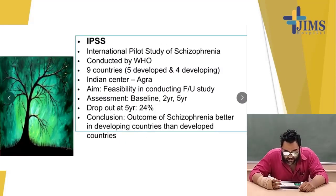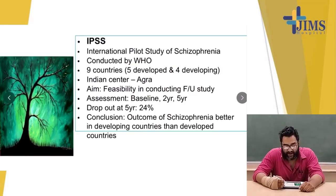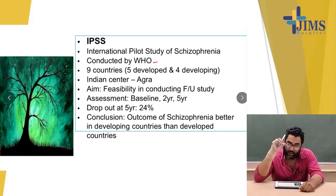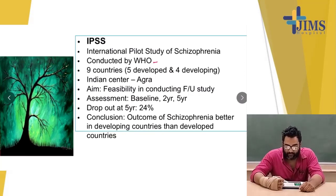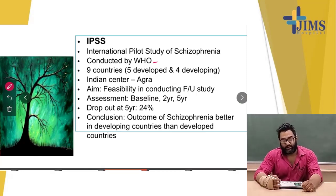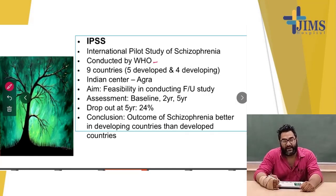The IPS, the International Pilot Study of Schizophrenia, was conducted by WHO across nine countries — five developed and four developing. The Indian center was Agra. The aim was to assess the feasibility of conducting a follow-up study. Baseline was at two and five years; dropout at five years was 24%. The conclusion was that the outcome of schizophrenia was better in developing countries than in developed countries.